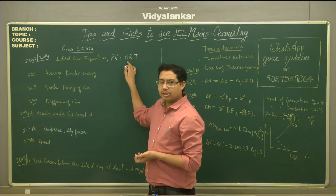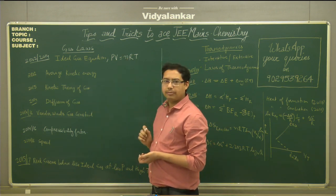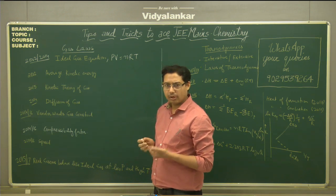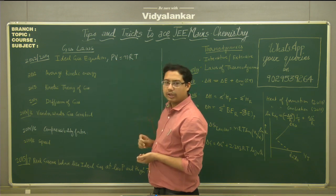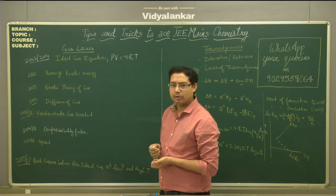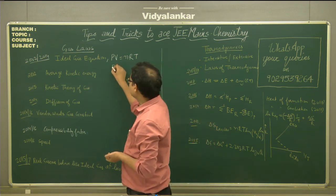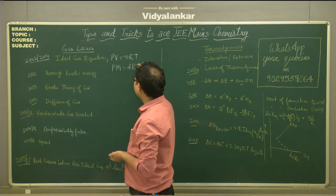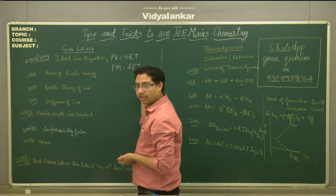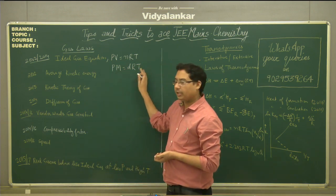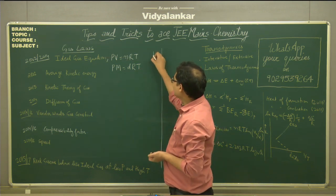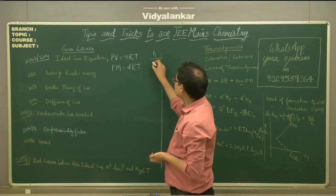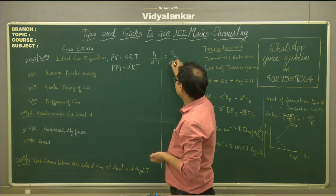Sometimes they can modify this equation. Number of moles can be written as weight divided by molecular weight. If we write weight by molecular weight and take volume on the right hand side, then weight by volume is known as density. So the equation becomes PM = dRT, where P is pressure, M is molecular weight, D is density, R is the universal gas constant, and T is temperature. If pressure changes and temperature stays the same, then P1/d1 = P2/d2.